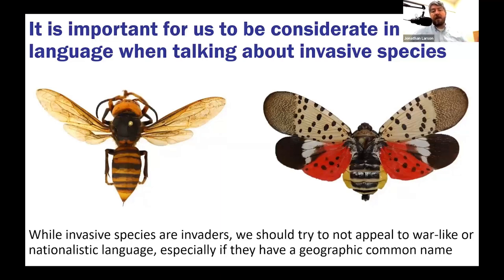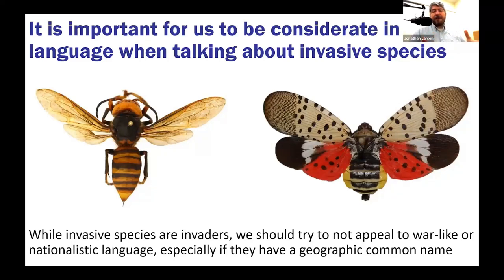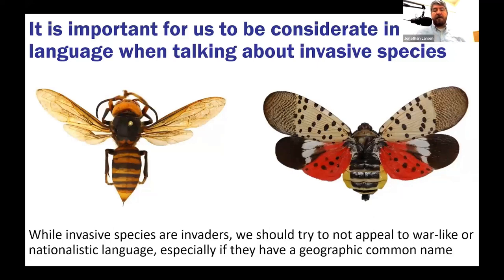It's important to be very considerate in our language when talking about invasive species. In the past, jingoistic or militaristic terms have been used — things like 'the war on spotted lanternfly' or 'annihilating' them. Common names referencing geographic locations like 'Asian giant hornet' are being phased out — that's why it's now called the northern giant hornet. The spotted lanternfly, while also from Asia, doesn't have Asia in its name, so we don't deal with that particular issue. Think carefully about how you're talking about invasive species and what it may mean for specific members of your audience.